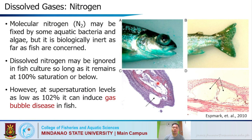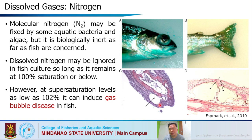In cases where dissolved gases are too saturated or concentrated in the culture environment, fish can suffer from gas bubble disease — characterized by bubble-like formations in the fish's eyes and tails. Histologically, empty spaces appear in the flesh of the fish. This is due to supersaturation levels of nitrogen or oxygen, as documented in research.